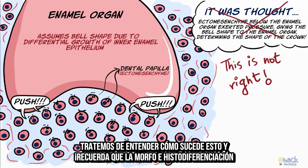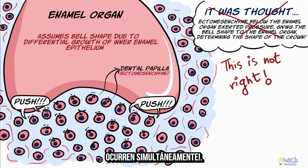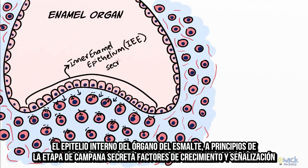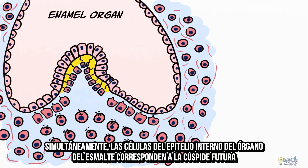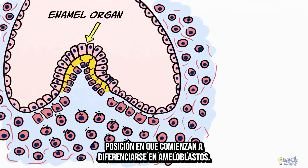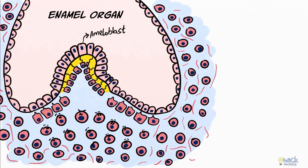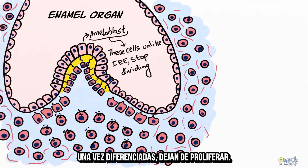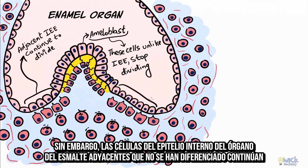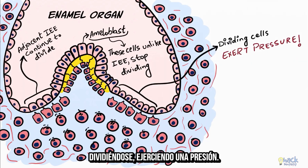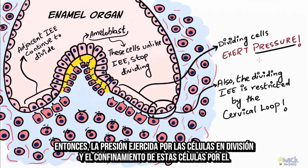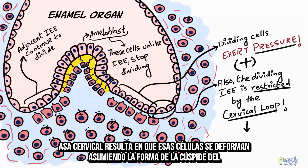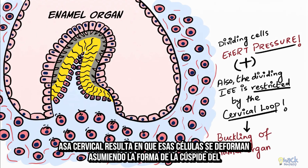Let's understand how this happens, remembering that morphodifferentiation and histodifferentiation happen simultaneously. The inner enamel epithelium in the early bell stage secretes growth factors and signaling molecules which help in differentiation of dental papilla cells to become odontoblasts. Simultaneously, the inner enamel epithelial cells corresponding to the future cusp tip position begin to differentiate into ameloblasts. Once differentiated, they stop proliferating. However, the adjacent undifferentiated inner enamel epithelial cells continue to divide, exerting pressure. Also, the inner enamel epithelium is constrained by the cervical loop, so the pressure from dividing cells and the confinement by the cervical loop results in these cells buckling and assuming the shape of the cusp of the corresponding tooth.